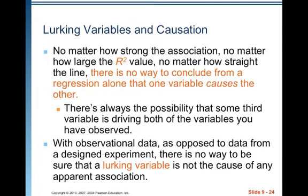No matter how strong the association, no matter how large the R-squared value, no matter how straight the line, there is no way to conclude from regression alone that one variable causes the other. There's always the possibility that some third variable is driving both of the variables you have observed. With observational data as opposed to data from a designed experiment, there is no way to be sure that a lurking variable is not the cause of any apparent association.